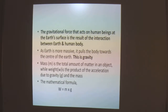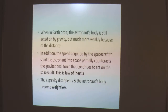As Earth is more massive, it pulls the body towards the center of gravity. This is called gravity. Mass is the total amount of matter in an object, while weight is the product of acceleration due to gravity and mass. If we assume a mathematical formula, weight is equal to mass multiplied by gravity.